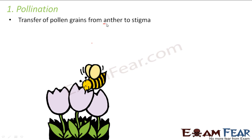For sexual reproduction to happen, the pollen grains should meet the egg. In order for the pollen grain to meet the egg, it has to travel to the female reproductive part — that is, the carpel — specifically reaching the stigma. The pollen grains are present in the anther, so they have to move from anther to stigma. This transfer is known as pollination, and it is the first step of sexual reproduction.